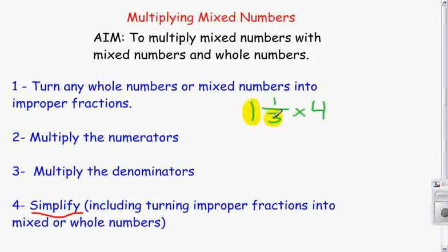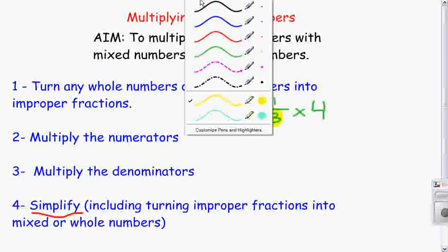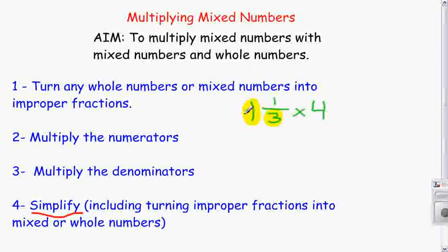times my denominator, 1 times 3, and then I'm going to add it to my numerator. So that gives me the improper fraction. 1 times 3 is 3, 3 plus 1 is 4. I now have 4/3 as my first fraction.